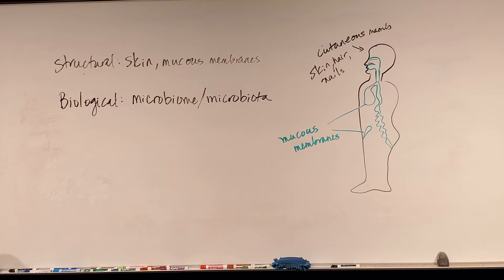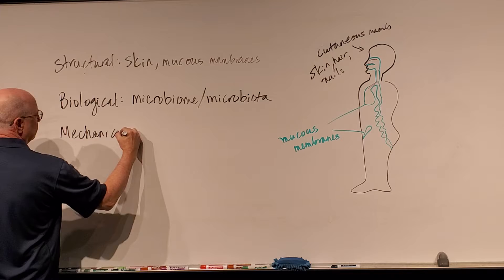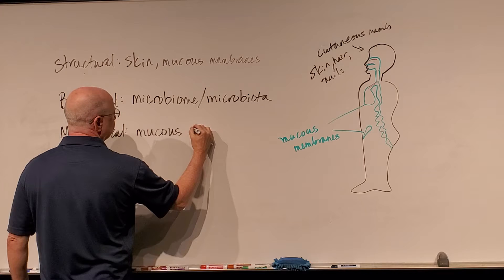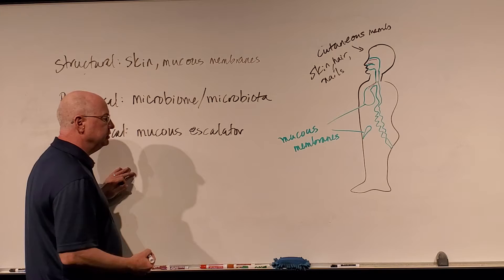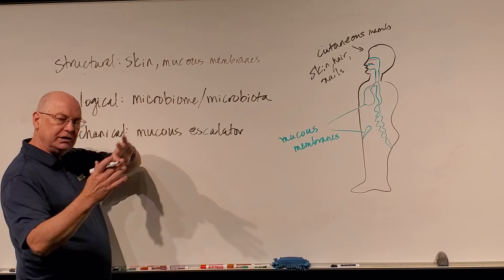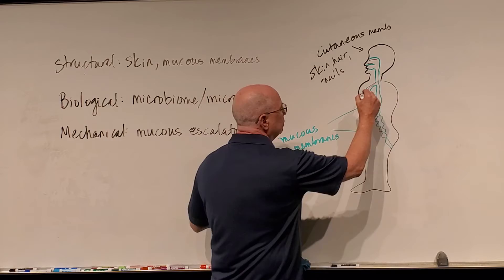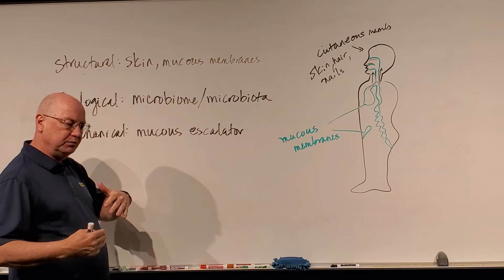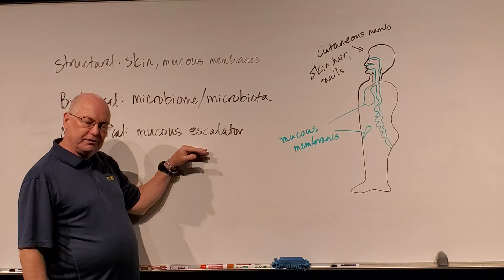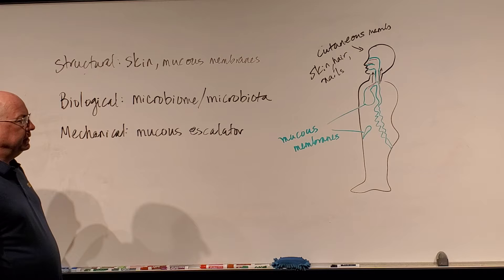There is also a mechanical component. That mechanical component involves what we call the mucus escalator. In the respiratory tract — in the trachea and part of the nasal passageways — we have the pseudostratified ciliated columnar cells with cilia that are beating. As we produce mucus, the mucus is actually forced to move up and away from the respiratory tract, protecting our lungs from dirt, debris, and pathogens.